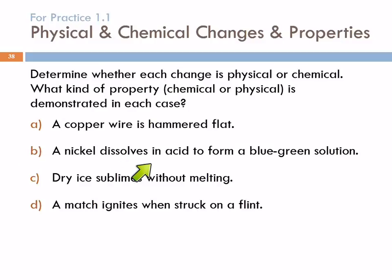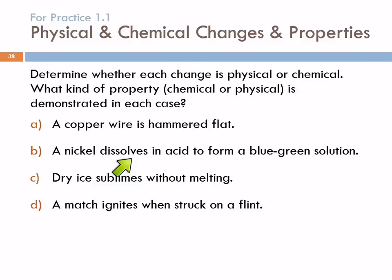A nickel dissolves in acid to form a blue-green solution. That's a chemical change. We know what a nickel looks like — a silver-colored coin — and now we're getting a blue-green solution, a change in color. This word 'dissolving' doesn't necessarily mean it's a chemical change; usually dissolving means physical change. But here it's dissolving in acid and forming something new, so this is a chemical change. The property — that nickel dissolves in acid — is a chemical property, because the nickel becomes something else: nickel ions.